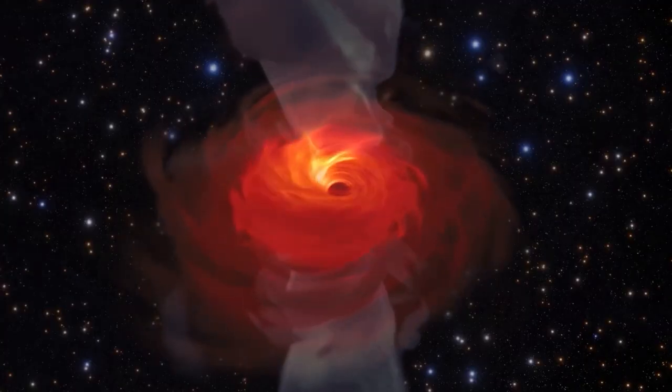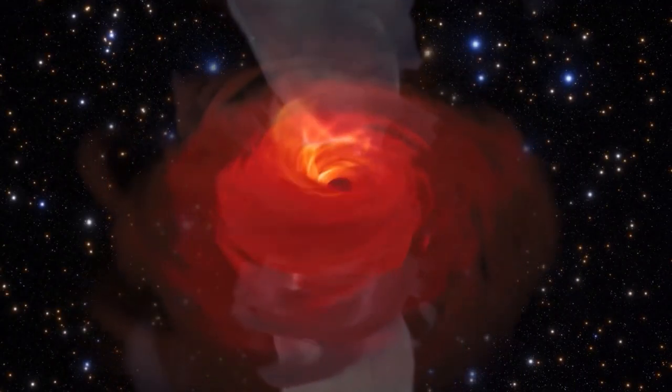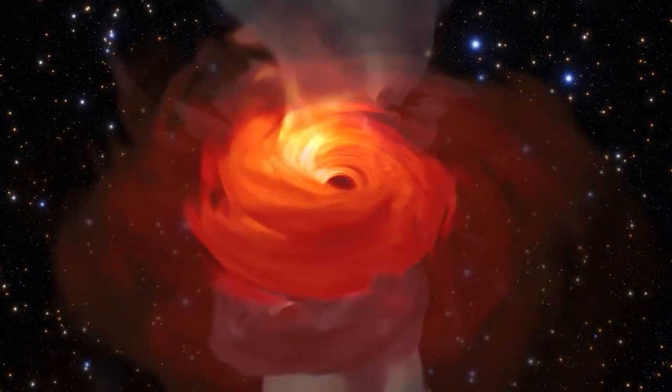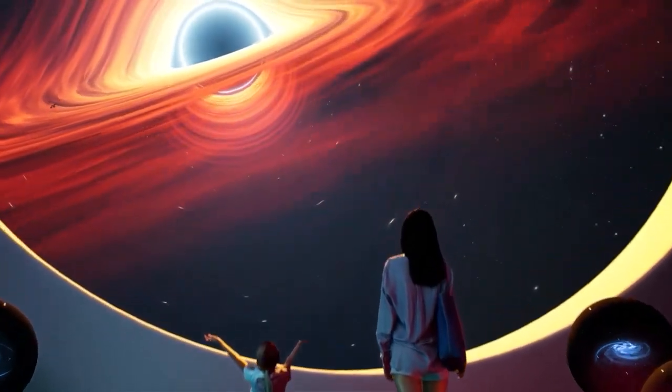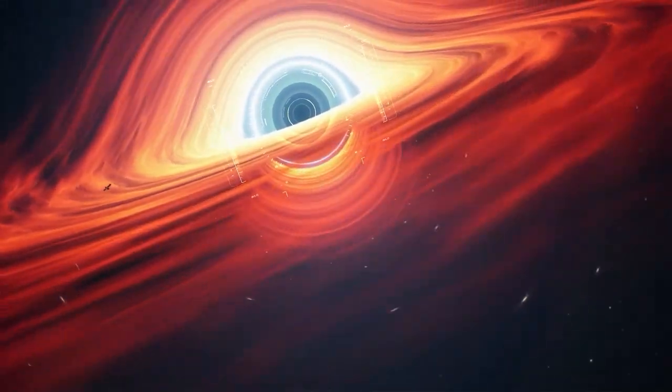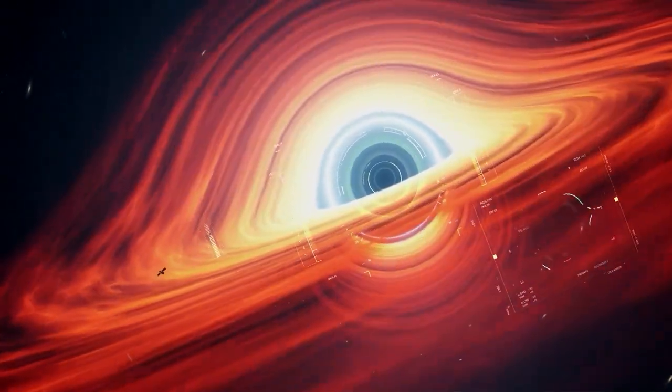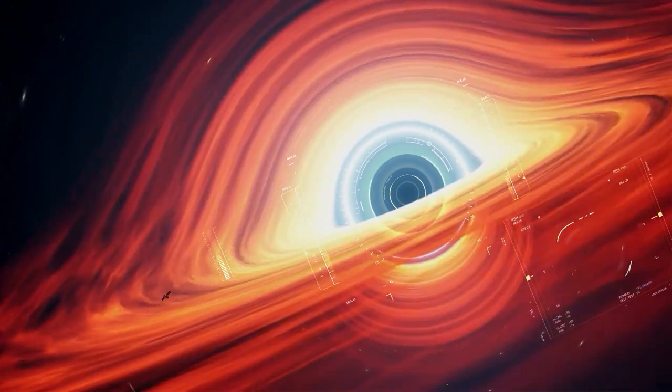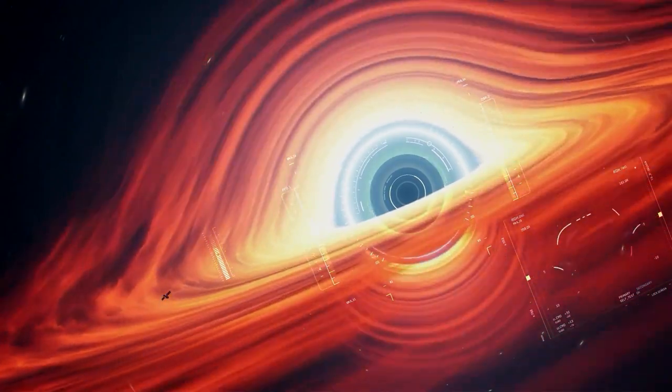This image of Sagittarius A star, like the one before it of M87's black hole, was made possible by the magic of very long baseline interferometry, which allows astronomers to combine data from radio telescopes all over the world as if they were one large telescope, effectively making the Event Horizon Telescope the largest telescope on Earth.